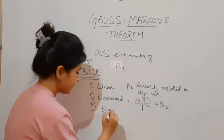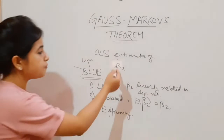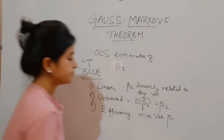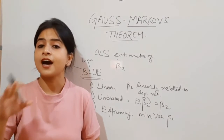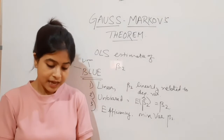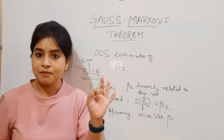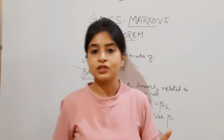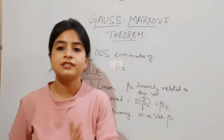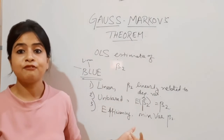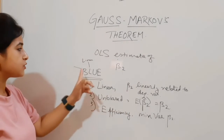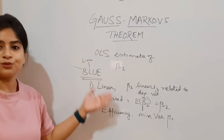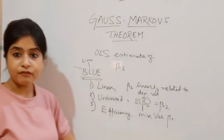E stands for efficiency — the third property. Efficiency of beta 2: if we have the minimum variance of beta 2 among all the other OLS estimators of the same regression model, then beta 2 becomes an efficient estimator. If any estimator has the lowest variance among all others, we call that the minimum variance efficient estimator. So these three are the major properties for BLUE: it has to be linear, unbiased, and efficient.